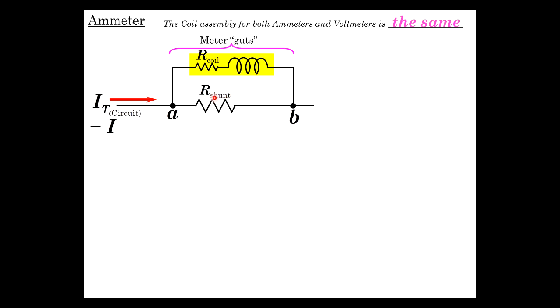Why is it called shunt? Because it's a low resistance and most of the current shunts or passes through that resistor rather than through the meter. You don't want a whole bunch of current. Well, it doesn't take a lot of current through here to cause a deflection in the meter.